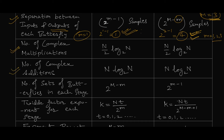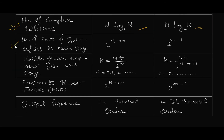The number of complex multiplications and complex additions can be calculated in the same way as for DIT — the formulas are the same. Next is determining the number of sets of butterflies in each stage. For DIT with capital M equal to 3 and small m equal to 1 for stage one, this comes out to 2^(3-1) = 4 sets.